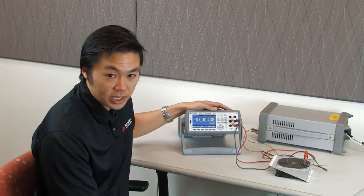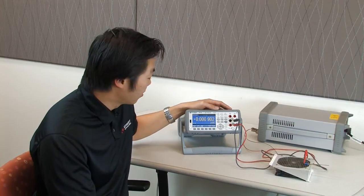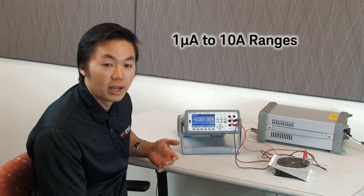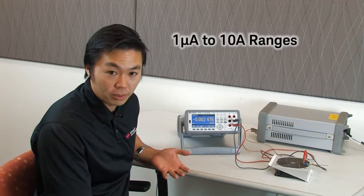The new voltmeters, the 34470 and the 34465, offer a 10 amp current range, but they also offer a very low current range in the 1 microamp range.